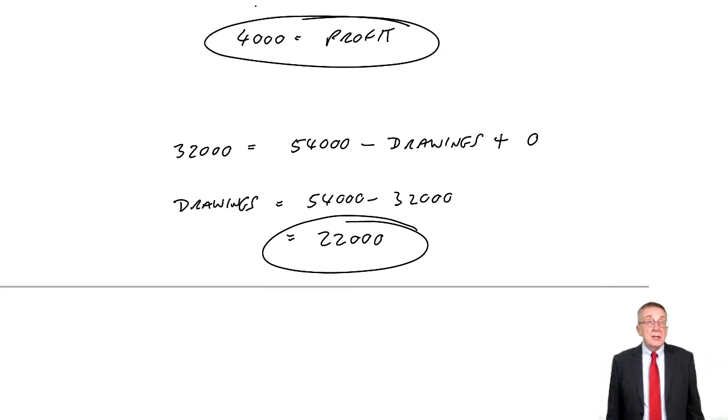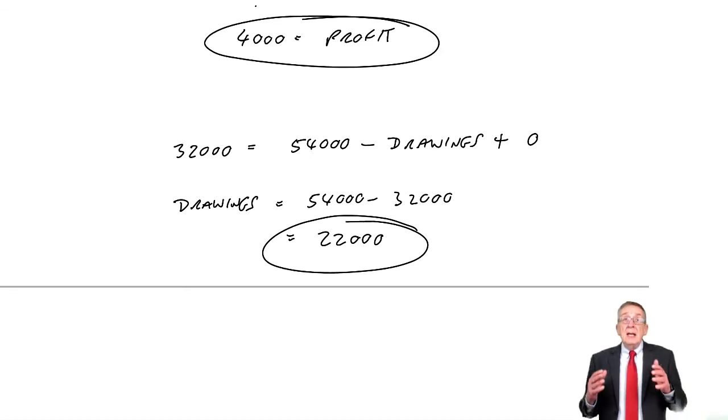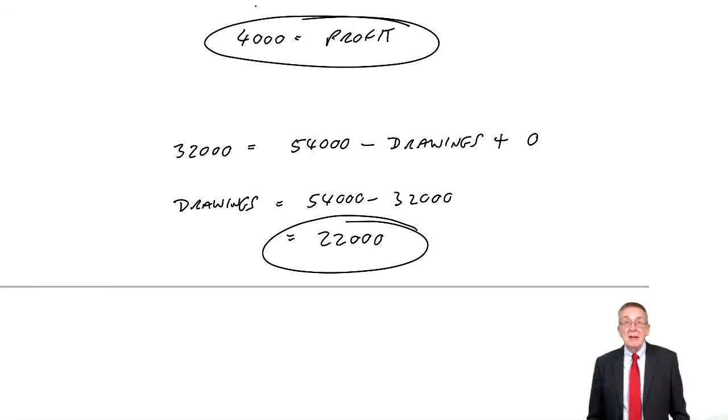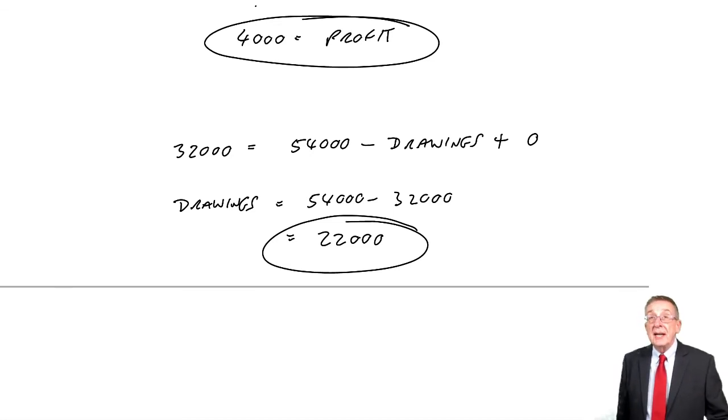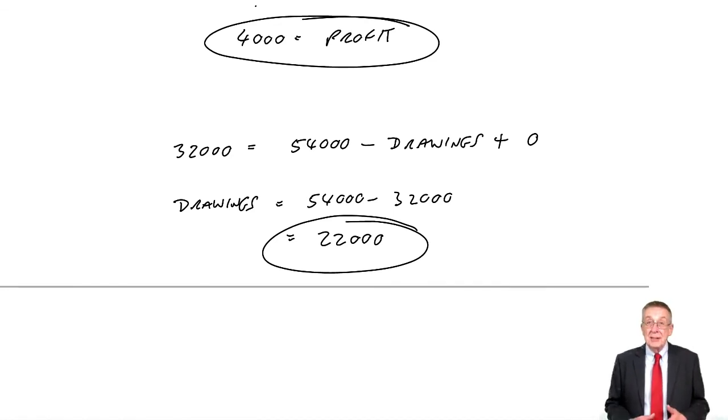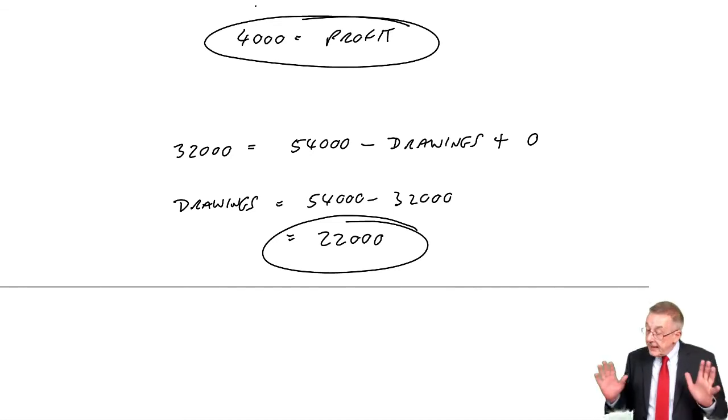But we do need to have recorded each transaction as it happens. So, what we're going to do, and I'll explain how in the next chapter, is every time there's a transaction, day by day, we will make a record. But only at the end of the period will we then take the information from the records and actually produce our statements. So, the next chapter will be showing how we actually record each transaction and how we then take our records at the end of the period to be able to produce these statements. That's the next chapter.